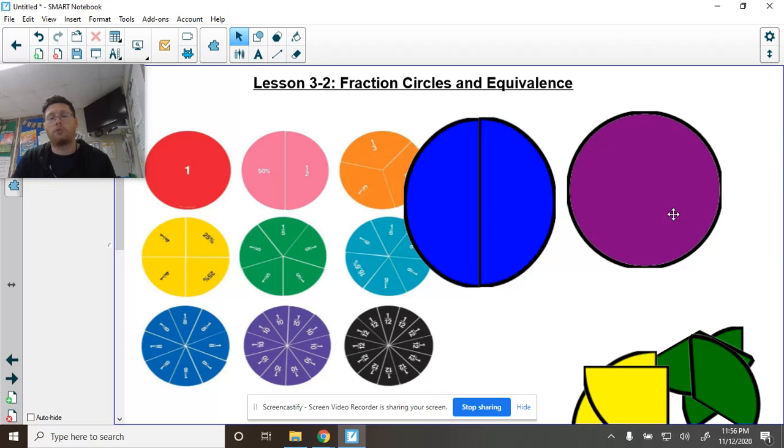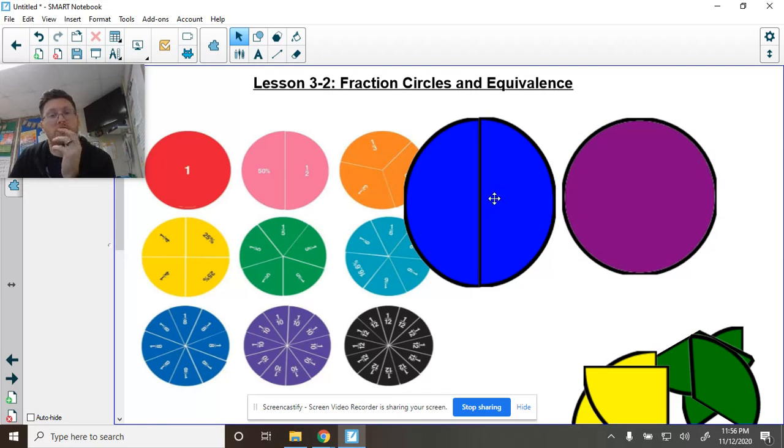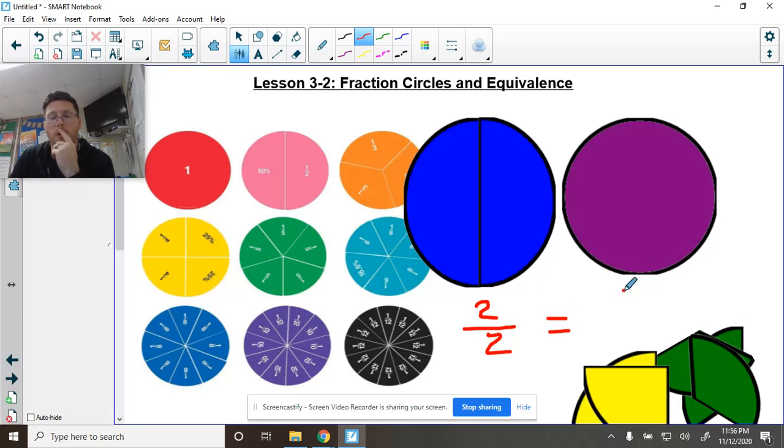are roughly the same size. Again, this is not exactly because I had to try to make these work just right to a whole. So 2 over 2, if I write that, 2 over 2 is equal to 1 over 1, which is one whole.